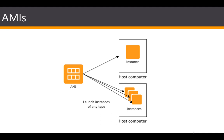The first basic concept of EC2 infrastructure is Amazon Machine Images, or AMIs. AMIs are essentially a template that contains a software configuration — for example, an OS and a number of applications. To use an AMI, you launch an instance, which is a copy of the Amazon Machine Image running as a virtual server in the cloud. You can launch multiple instances from a single AMI, as shown on screen, and your instances keep running until you stop, terminate, or they fail.